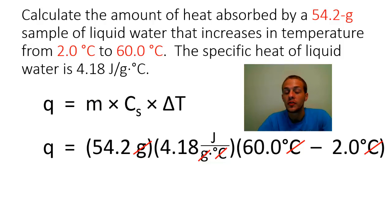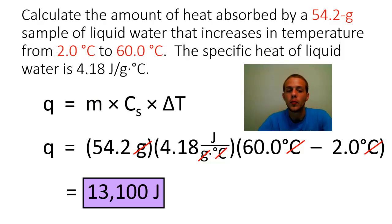And all we have to do is just punch our numbers into a calculator. And we're going to take it to three significant figures, and it's going to end up being 13,100 joules. So that's a lot of joules. So what this means is water has a very high specific heat capacity. 4.18 joules per gram per degree Celsius is an unusually high heat capacity.